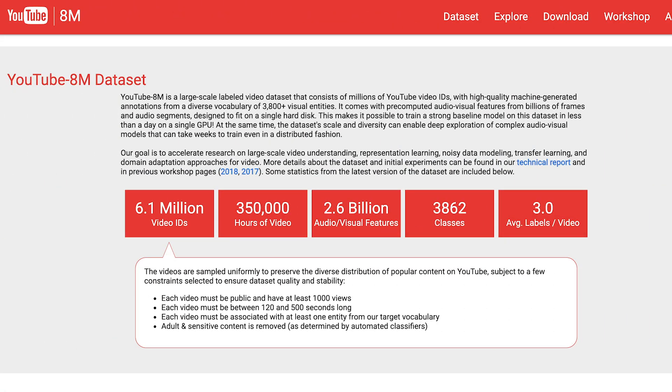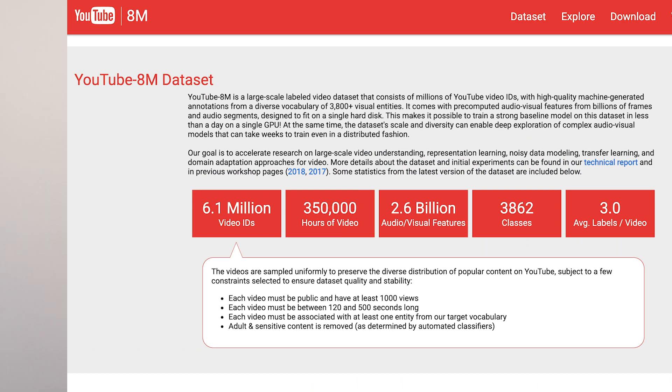A newer but interesting dataset for image and video classification is the YouTube 8M dataset. This is a massive dataset of almost 8 million videos and thousands of labels. It's honestly an unwieldy dataset unless you can store it in the cloud or have a computer with a lot of storage space — the whole dataset is several terabytes, so it's not something you're going to be downloading to a local computer. However, it's definitely an interesting and relatively new dataset, and Kaggle has had multiple competitions to create automated labeling and classification systems for YouTube videos.